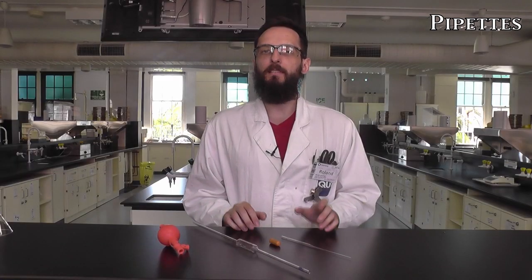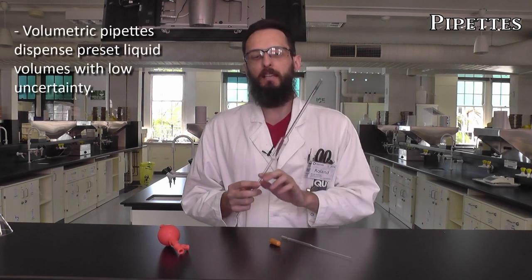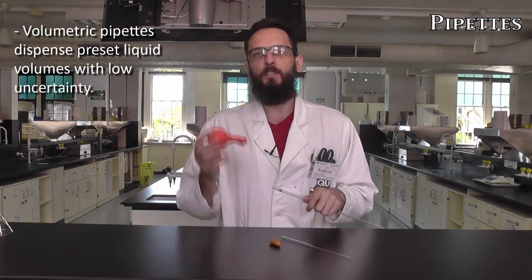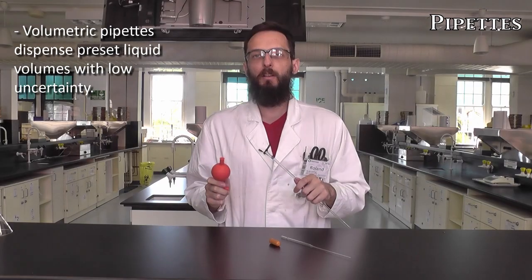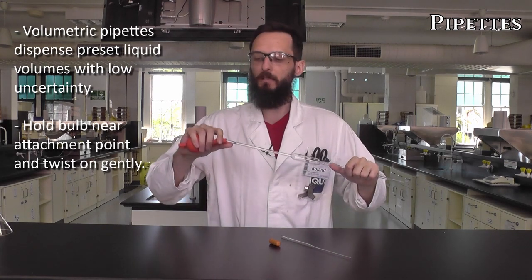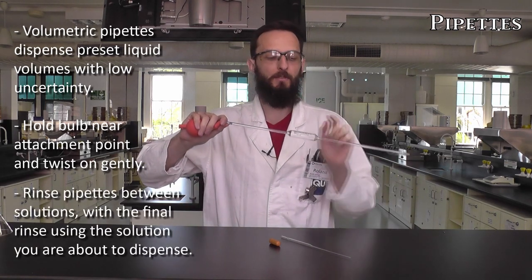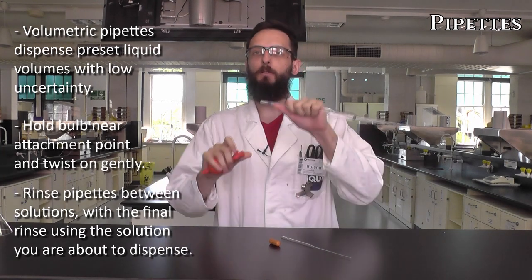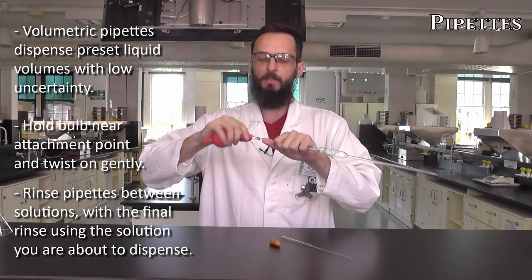When we want to dispense larger volumes of liquid or measure them accurately, we can use these volumetric pipettes, and just like before we fill them up to this mark. They're used in conjunction with these bulbs. When we want to attach these two pieces together, we need to make sure that we don't hold too far down the volumetric pipette, because this places a lot of stress on the glassware joints and it's very easy for it to break. So we want to hold nice and close and just do a gentle twist.